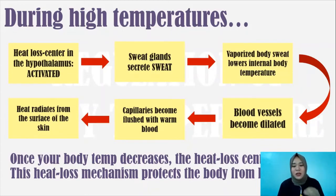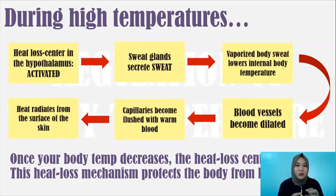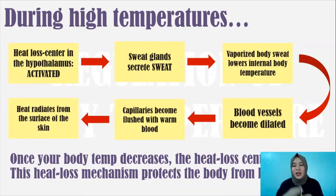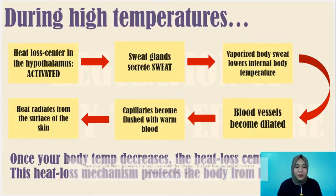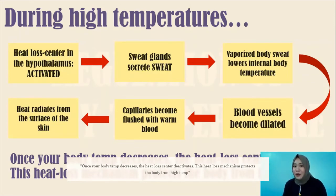As the heat is continuously radiated, the excess heat in the blood is released outside your body, until the normal internal body temperature is achieved. The target is to lose excess heat from the body, and as the excess heat is released, the body temperature gradually lowers to the normal body temperature of 36–37 degrees Celsius. Once your body temperature decreases, the heat loss center is then deactivated. This heat loss mechanism protects the body from high temperature.